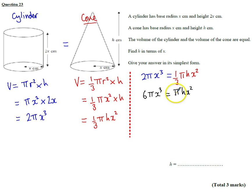And then I can divide both sides by pi, so I get 6 x cubed is equal to h x squared. And then if I divide both sides by x squared, I'm going to get 6 x here, and I'm just going to get h here. We want to find h in terms of x, which is what we've done.